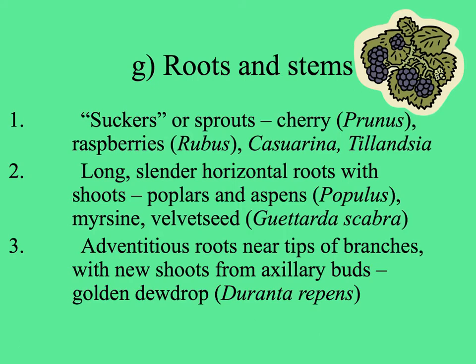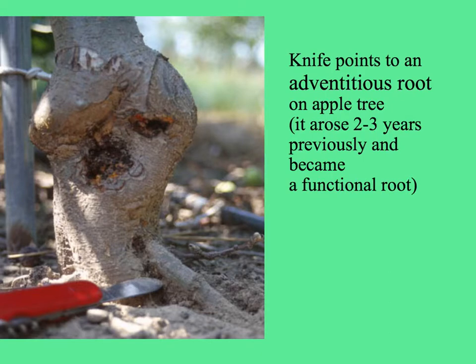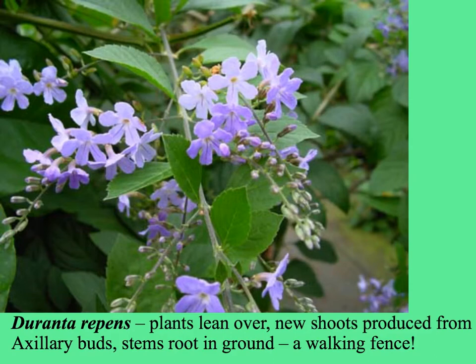In some plants, the tips of branches develop adventitious roots and can make a new plant that way, such as the golden dew drop. Here's an adventitious root on an apple tree — they pop out of the stem and grow into the ground, sometimes just as an extra root, other times making a whole new plant. The golden dew drop is a beautiful plant that attracts all kinds of pollinators, and you can make a living hedge from it because its branches lean over and root into the ground, creating a kind of walking fence.